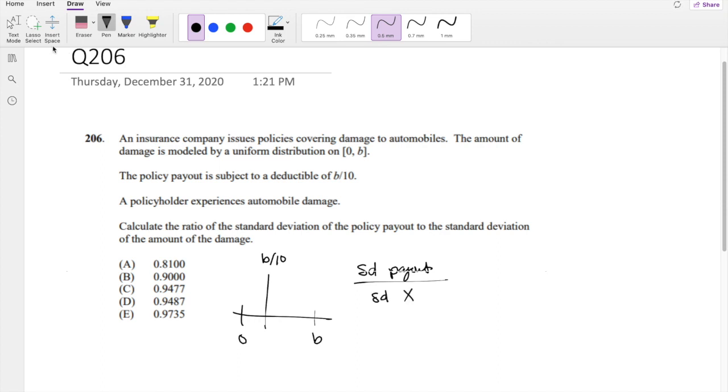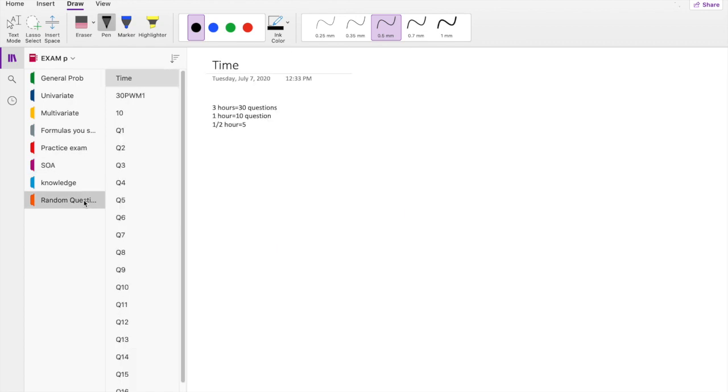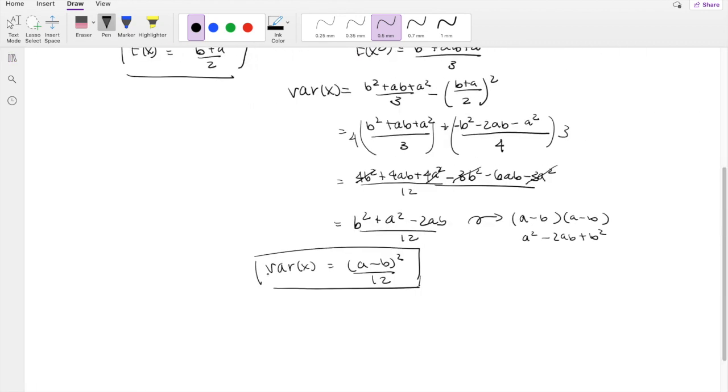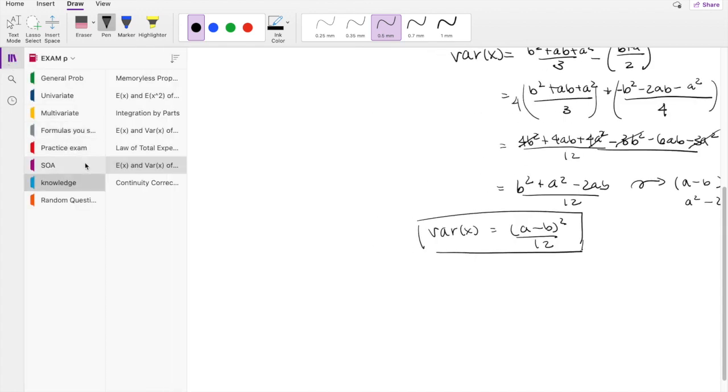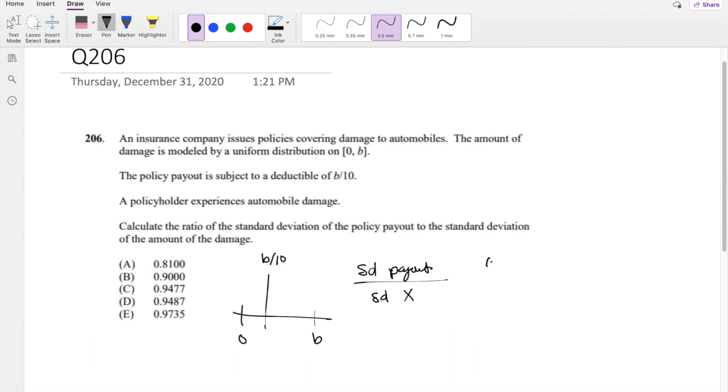So if we know damage x is just this, I actually proved this in my other video, but the variance of a uniform distribution is just B minus A squared over 12. Where A is 0 and B is just B, so this is equal to B squared over 12 is the variance. So we know standard deviation is square root of B squared over 12, which is just equal to B over square root of 12.